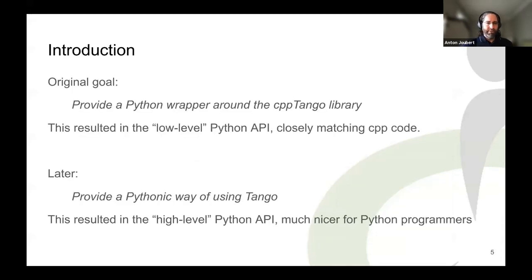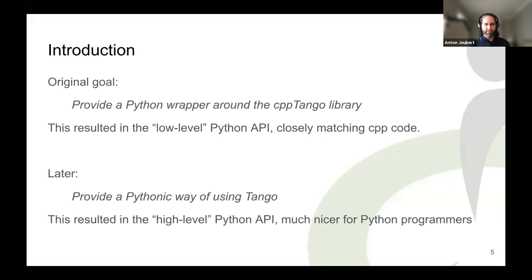The original goal, as far as I can tell, was just to be a wrapper around the C++ Tango library, giving us the low-level Python API where your Python code would look very much like C++ code. Later there was the idea to make it more Pythonic, which has been a big improvement. That gives us the high-level API, which if you're coming from a Python background is a lot easier and more intuitive to use.